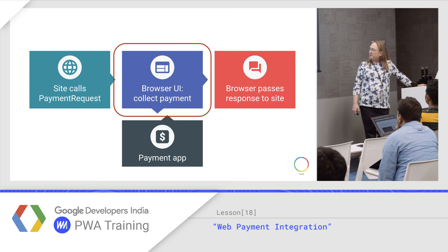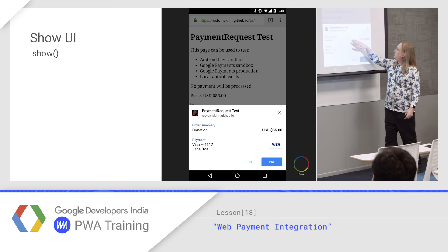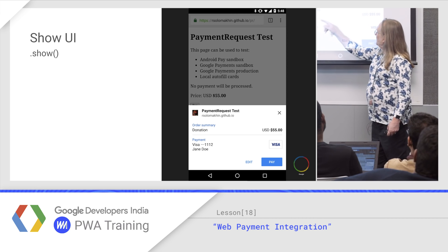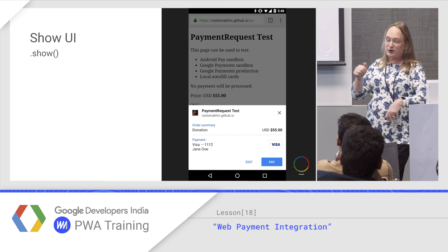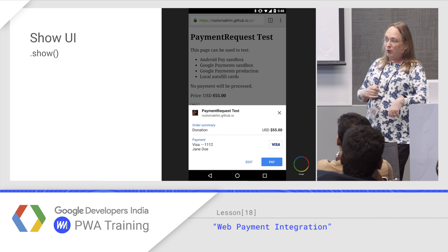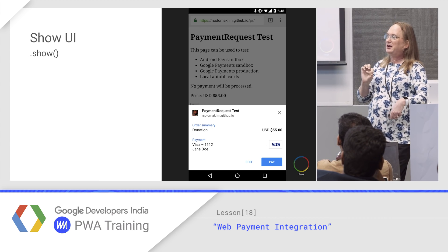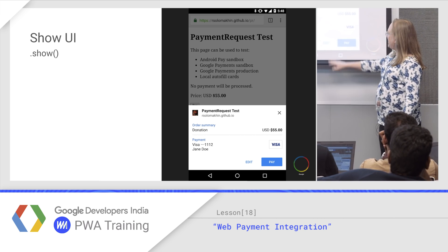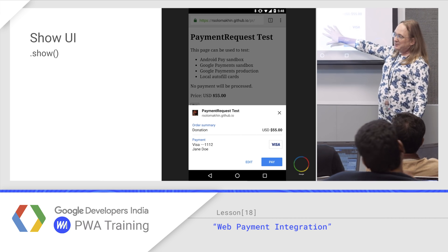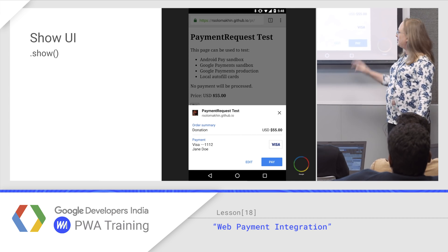The browser automatically pops up the UI to collect payment. The order summary shows the donation or purchase amount. The payment information is already in the phone — either typed in on a previous form, or if it's a new card, you can take a picture of the card and it'll scan it in. Maybe if it's the wrong credit card, you tap edit and make changes to payment type or shipping location. But most of the time what comes up is going to be correct, and if it's correct, you just hit pay.